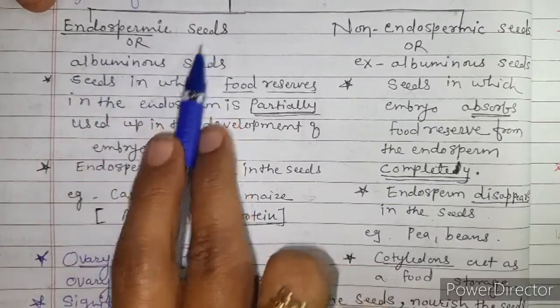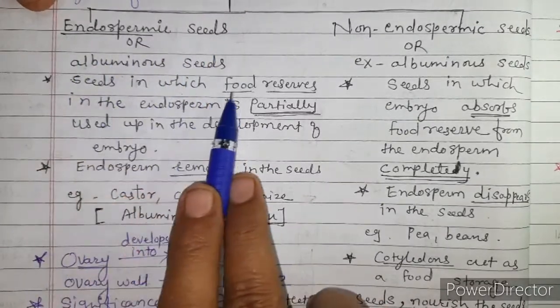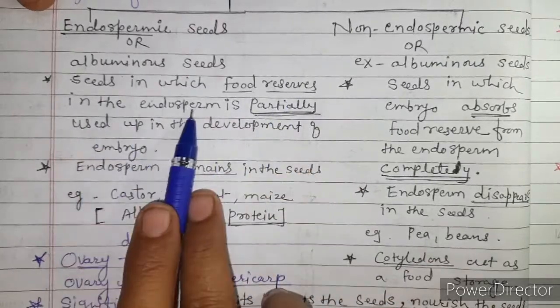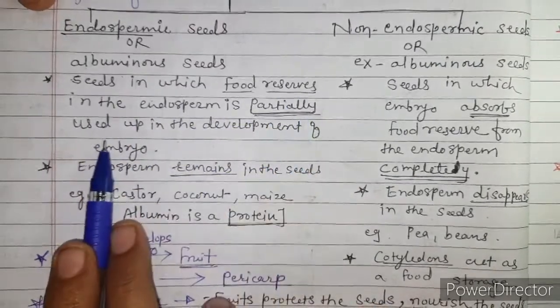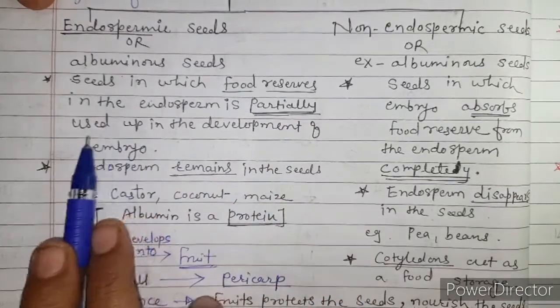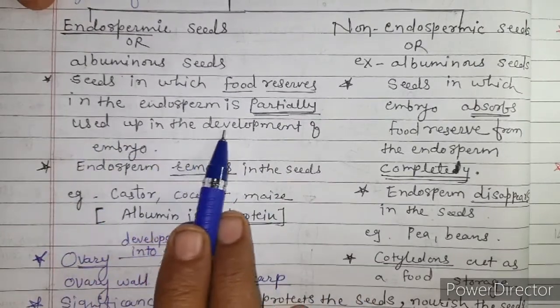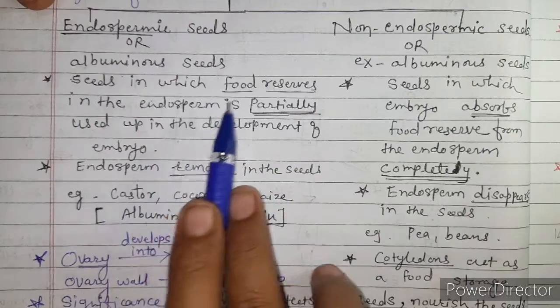So, endospermic seeds are those seeds in which the food reserve in the endosperm is only partially used in the development of the embryo, so endosperm remains present in the mature seed.